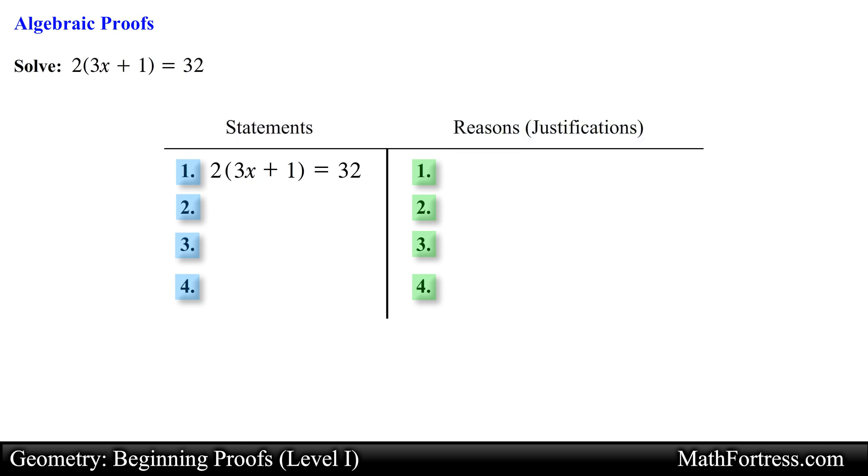Each statement must be numbered and correspond to a reason which has the same number as the statement in the left column. Each numbered statement and reason must originate on the same line. Usually the first statements in a proof will be given to you, in this case we are given this equation so the justification or reason for this statement will be given equation.